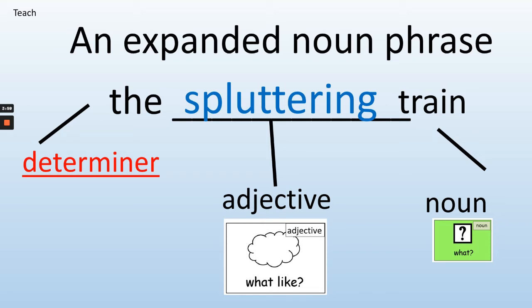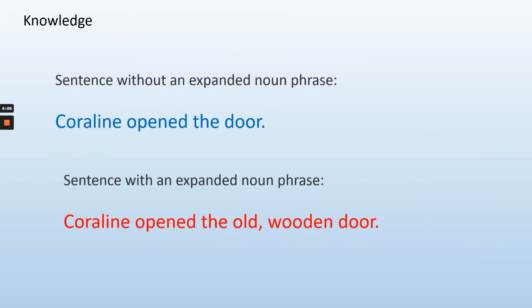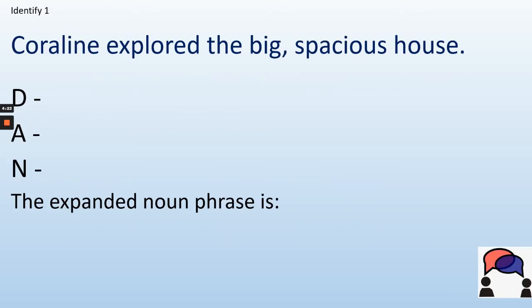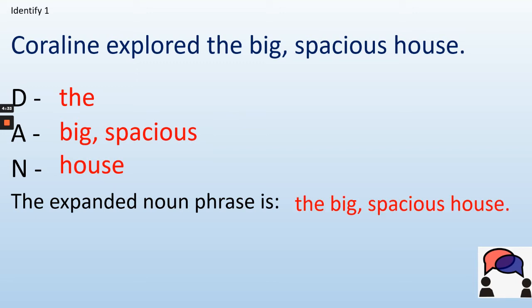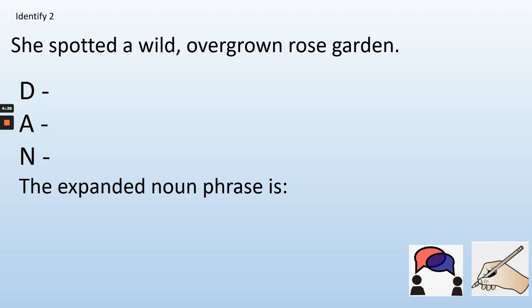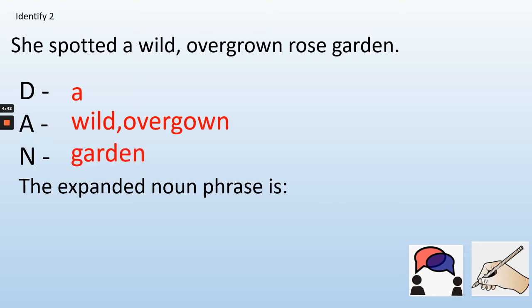So a sentence without an expanded noun phrase: Coraline opened the door. A sentence with an expanded noun phrase: Coraline opened the old wooden door — we can imagine what the door looks like. Coraline explored the big spacious house. The determiner is the, adjectives are big and spacious, noun is house. The expanded noun phrase is the big spacious house. She spotted a wild overgrown rose garden. Determiner a, adjectives wild overgrown, noun is garden. Expanded noun phrase: a wild overgrown rose garden.